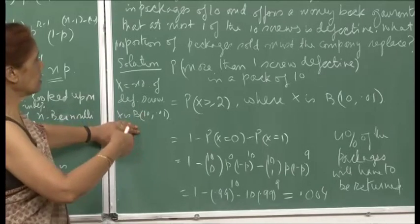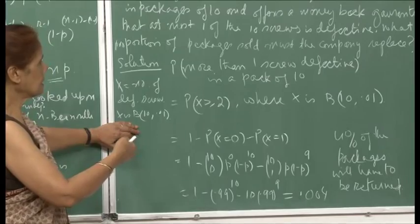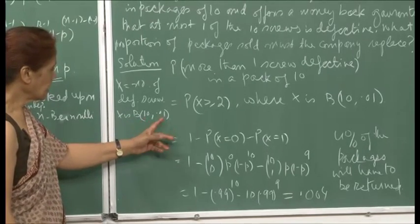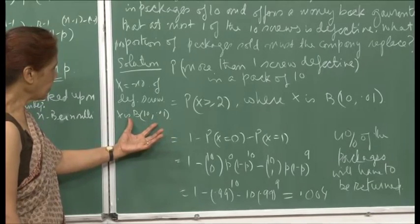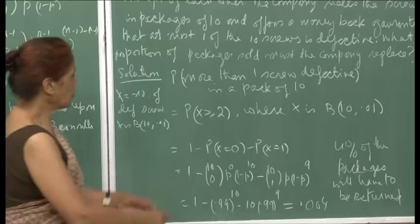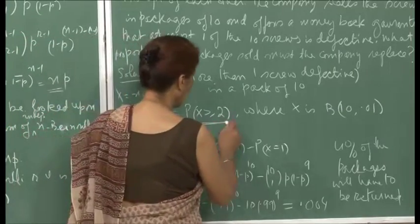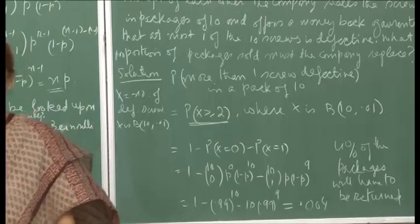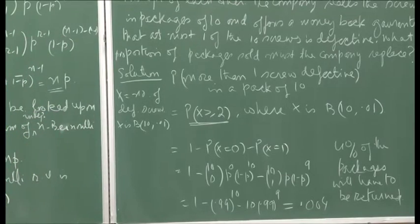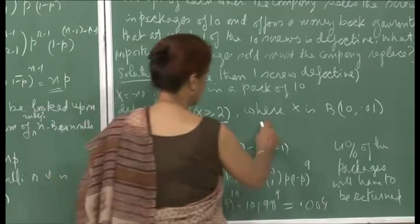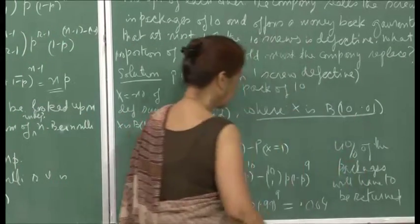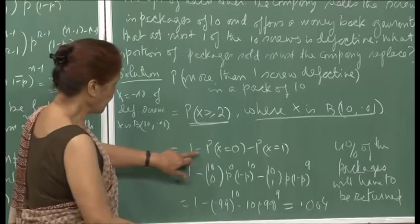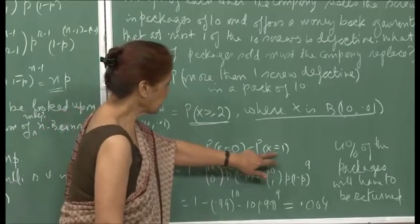If X is the number of defective screws, then X is binomial B(10, 0.01), treating a defective screw as a success. We want to find P(X ≥ 2), because when X ≥ 2 the package will be returned. We write P(X ≥ 2) = 1 − P(X = 0) − P(X = 1), since 0 or 1 defective screws are acceptable.